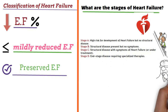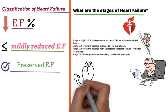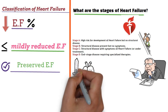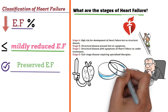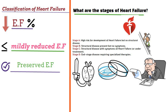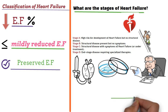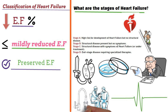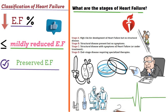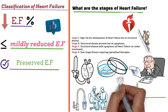What are the triggers for acute heart failure? The common causes are acute coronary syndrome, infection, tachyarrhythmia or bradyarrhythmia, hypertension, increased fluid intake or volume overload, medications like non-steroidal anti-inflammatory drugs, and pregnancy.